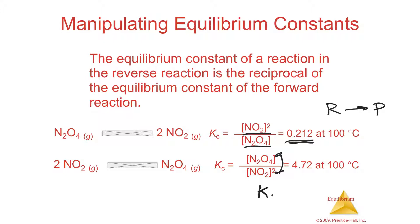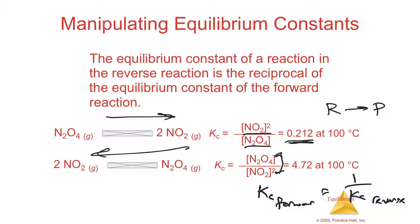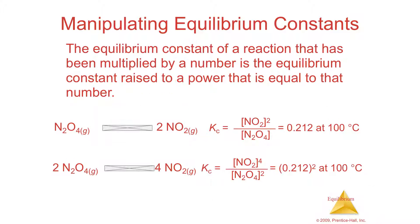So K_c forward equals 1 over K_c reverse — they are reciprocals of each other. For example, if the forward reaction has K_c = 0.212, you simply take 0.212 and press the 1/x (reciprocal) button on your calculator to get the K_c for the reverse reaction. K_c forward and K_c reverse are always reciprocals of each other.